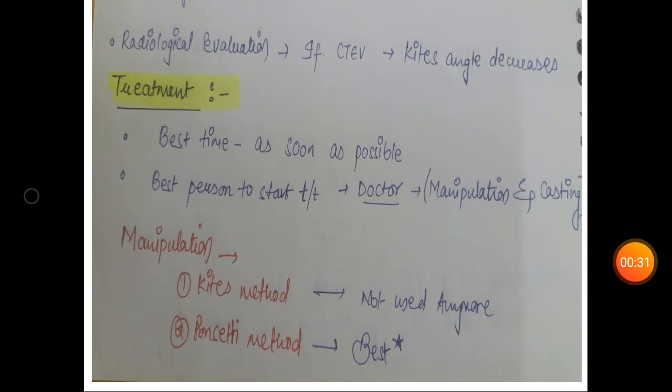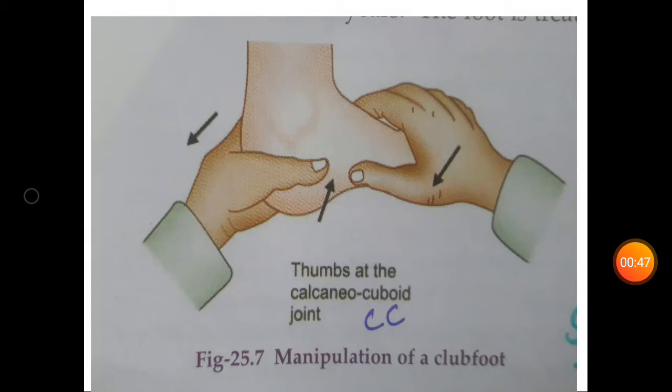You will ask the mother to manipulate the foot after every feed. The foot is dorsiflexed and then everted. Here you can see the foot is dorsiflexed and then everted. This pressure should be maintained for about five seconds and repeated several times over a period of roughly five minutes.